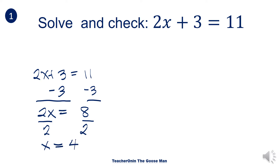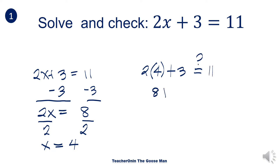Since the value of x is equal to 4, let's verify by substituting 4 in place of x. So I have 2 times 4 plus 3 is equal to 11. That gives us 8 plus 3 is equal to 11.